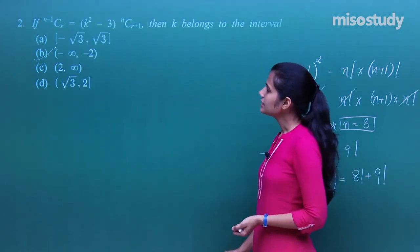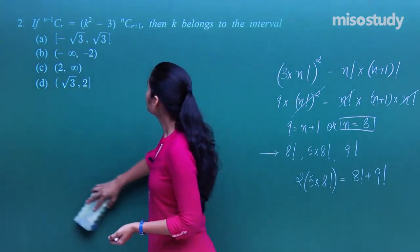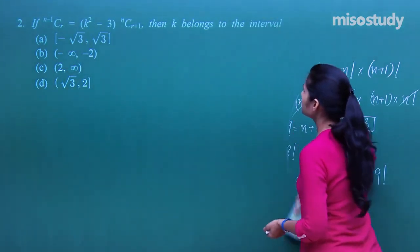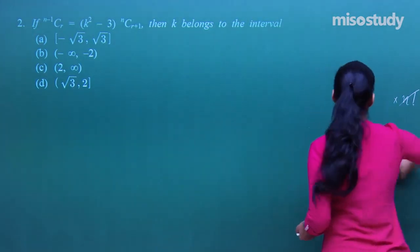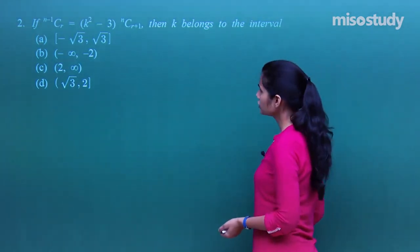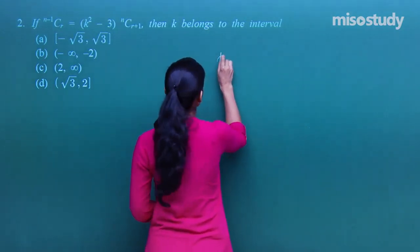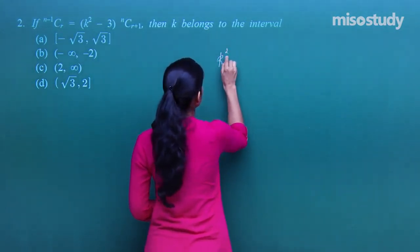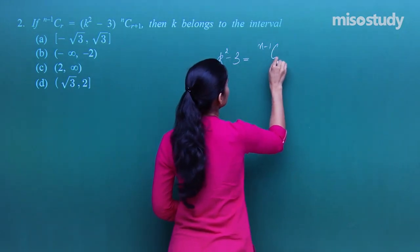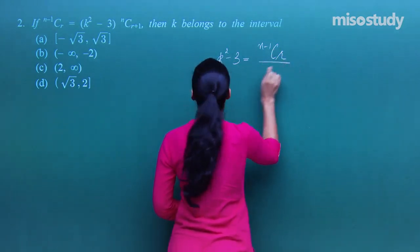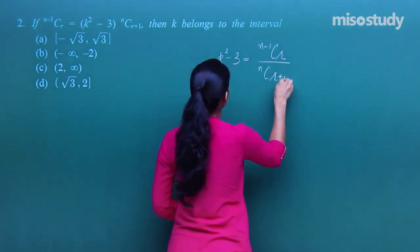The next question says that if n-1Cr equals (k²-3)·nCr+1, then k belongs to which interval? So k²-3 will equal n-1Cr divided by nCr+1.